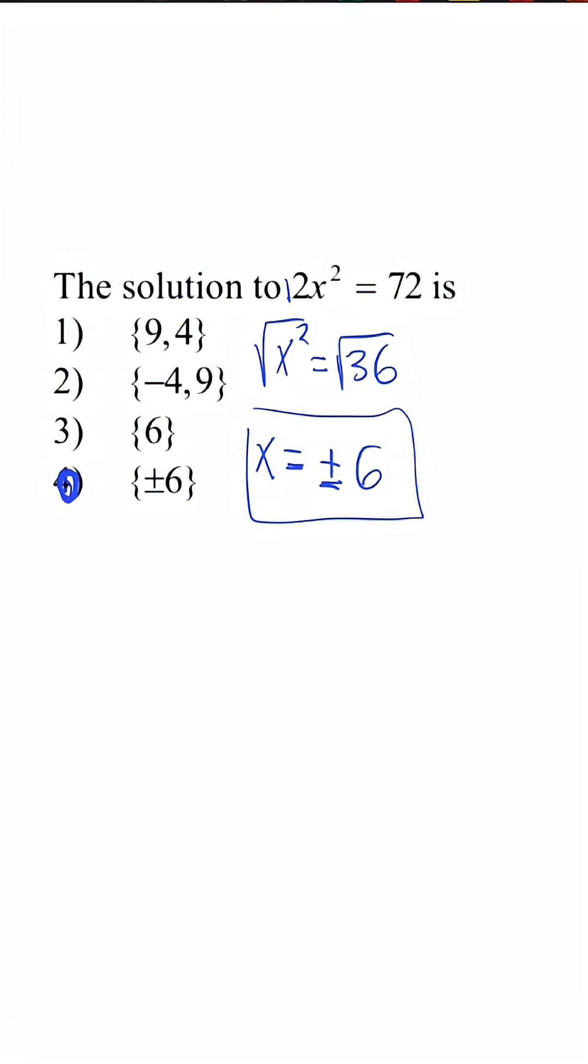Now, if we chose the other method and set this quadratic equation equal to 0, we could do it like this. I could take out a GCF of 2 and I'm left with x squared minus 36 is equal to 0.